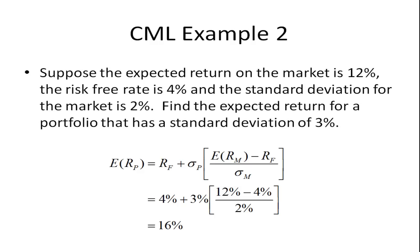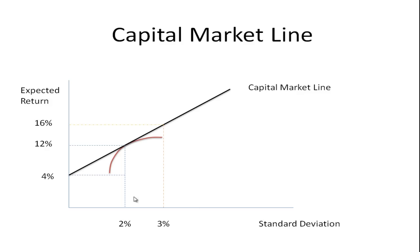Suppose the expected return on the market is again 12% and the risk-free rate is 4%, but this time the person chooses a portfolio with a standard deviation of 3%. Working through the equation, the expected return of the portfolio is 16%. This is the case where the person has chosen to leverage their portfolio — borrowing at the risk-free rate of 4% to buy more of the risky portfolio M — and they expect a return of 16%.